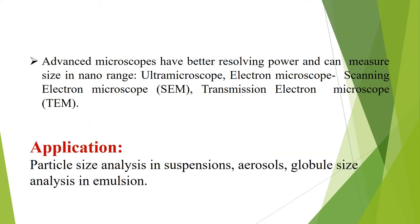Advanced microscopes have better resolving power and can determine nanosize range particle sizes. Examples include the ultra microscope, electron microscope, scanning electron microscope (SEM), and transmission electron microscope (TEM). We will learn more about SEM and TEM in other classes.